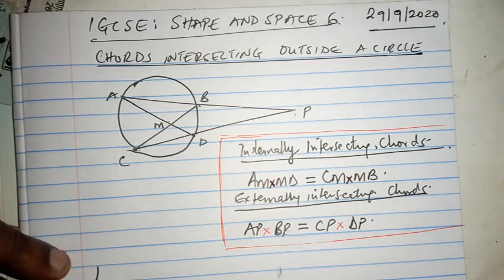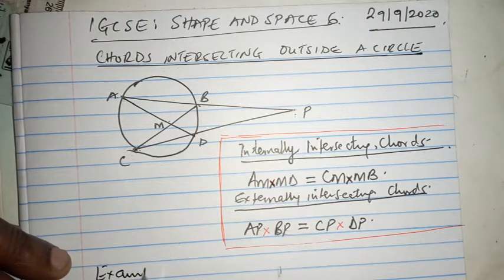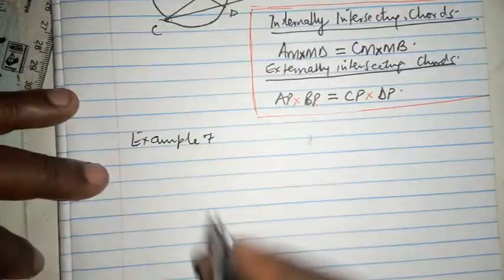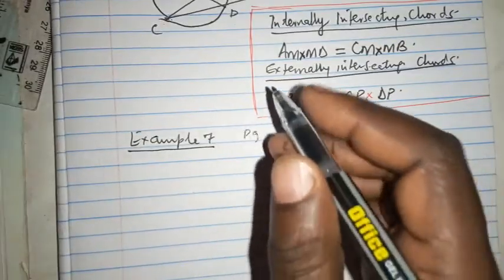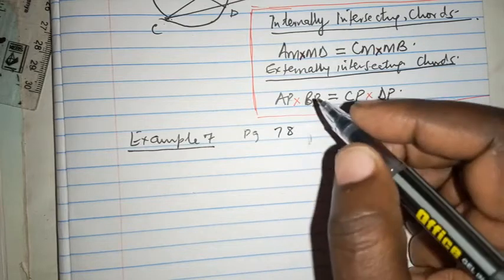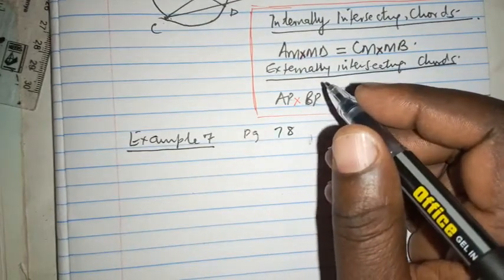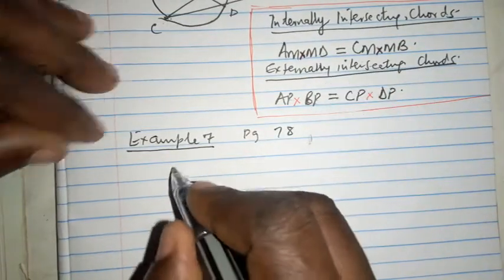And I want us to go direct to example seven, example seven on page 78.